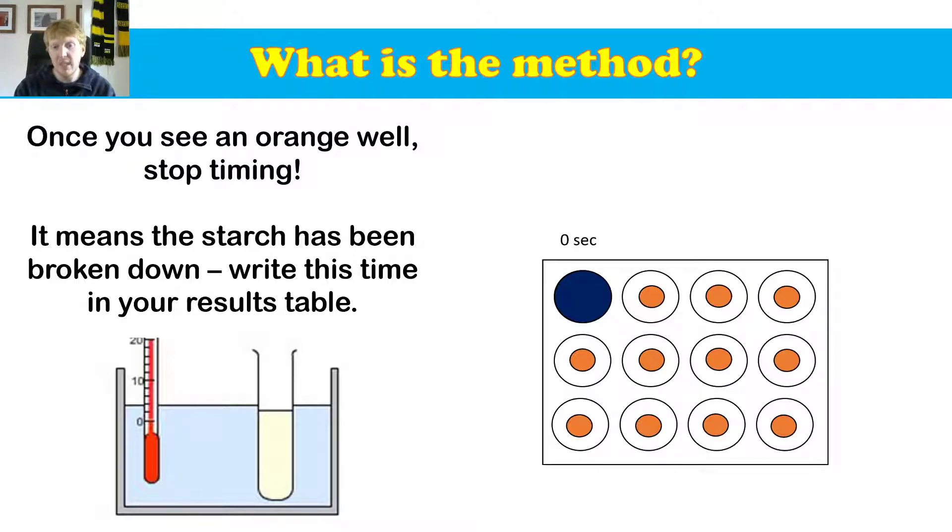And so now we're going to mix the amylase with it. And in 30 seconds time, what we're going to do is we're going to take another drop out of it and pop it there. And we can see it's starting to get a little bit lighter, which means the starch is being broken down.